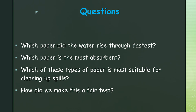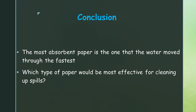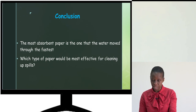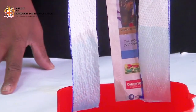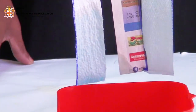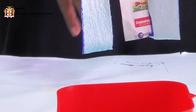So let's answer those questions: The water moved through the tissue and paper towel fastest — so those are the most absorbent. What can we conclude? The most absorbent paper is the one that the water moves through the fastest, and therefore it would be more effective for cleaning up spills. If we have spills at home, this particular tissue and paper towel would be most effective. Using newspaper for cleaning up spills is certainly not the most effective way.